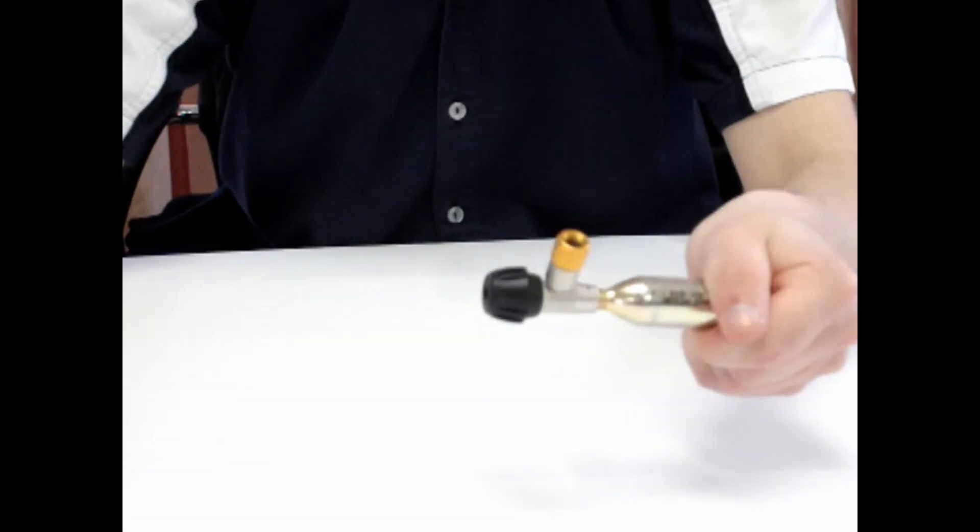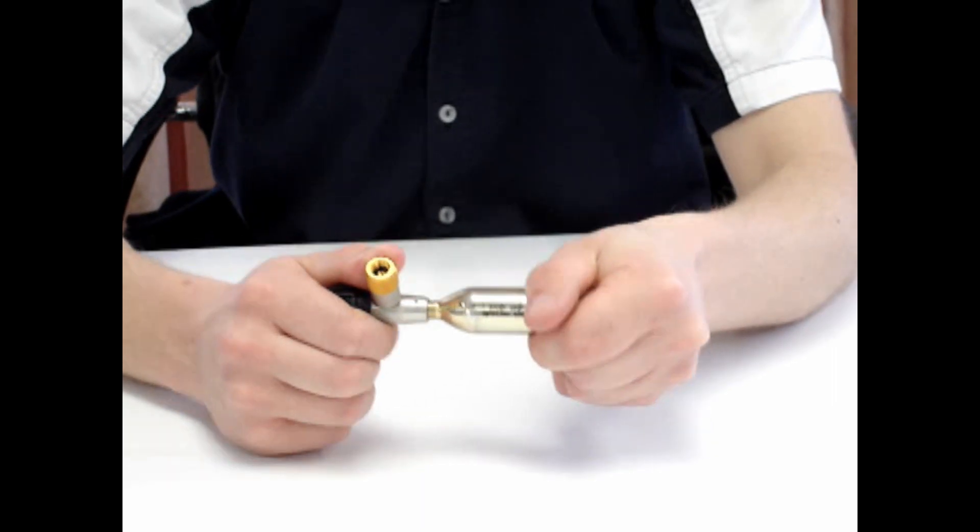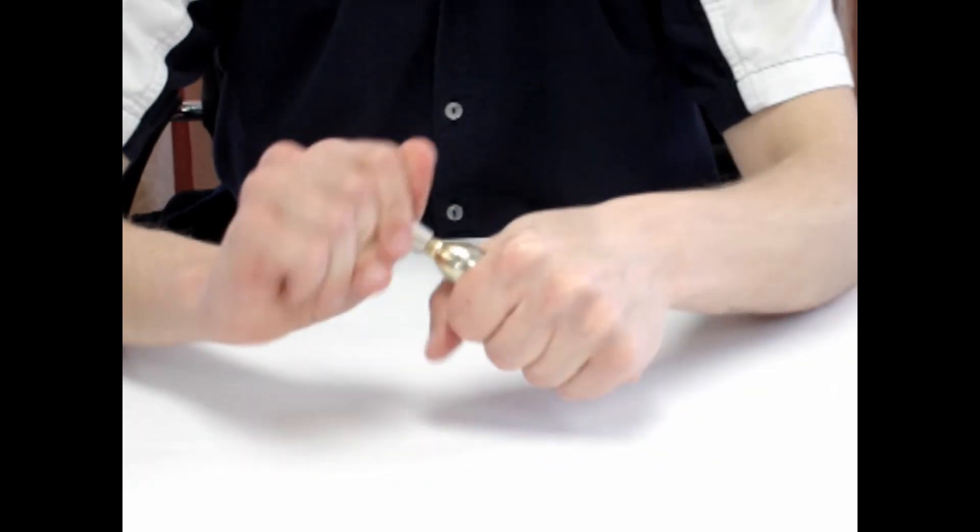So before it unthreads completely, in which case it would shoot with the pressure, the pressure is released, so you can unscrew safely without having to actually use the bomb. That's it.